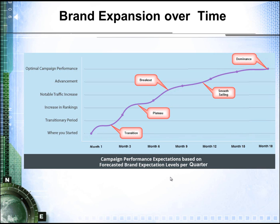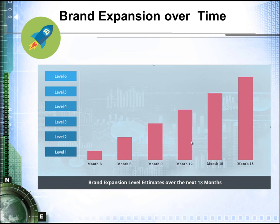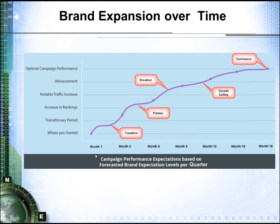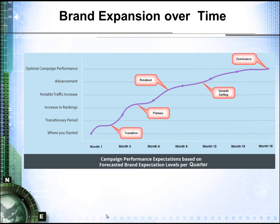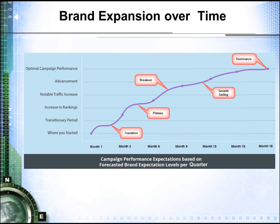So this is your first quarterly report to let you know that you're well on your roadmap to success. We're currently at level 1 in your brand expansion, and we look forward to getting to level 6. We look forward to the next check-in at the end of the second quarter in this report format.